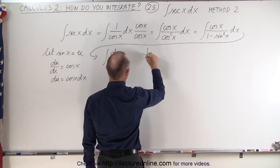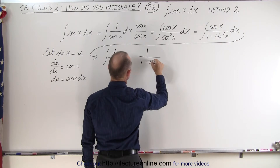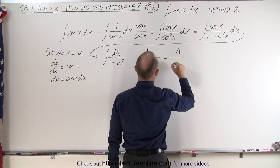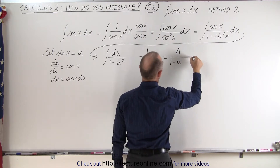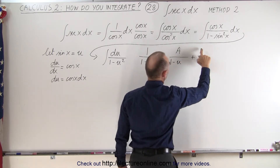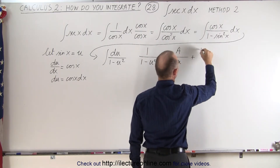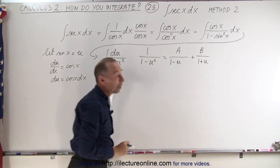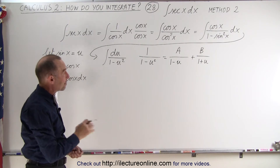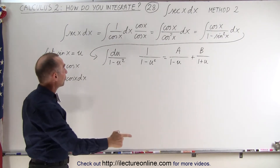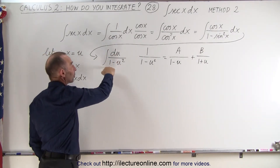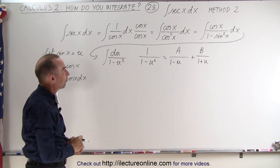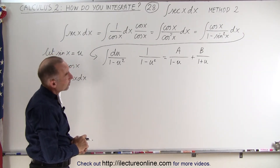What we're going to look at is: we can take 1 over 1 minus u squared and write it as A over 1 minus u plus B divided by 1 plus u. Now what we have to do is find what A and B are equal to, and then substitute that into the integral to be able to integrate this as two separate fractions.